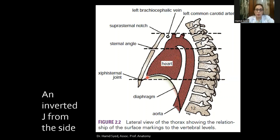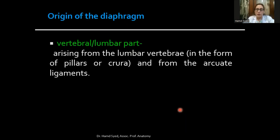Here is a simple diagram in profile. You can see the sternum, behind it the heart and descending aorta, and the vertebral column. If you follow the laser pointer, I'll trace the diaphragm — this line represents the diaphragm, which looks like an inverted J from the side. The anterior attachment is to the posterior surface of the xiphisternum, and here is the central tendon on which rests the heart enclosed by the fibrous pericardium. This is the more peripheral curved muscular part.